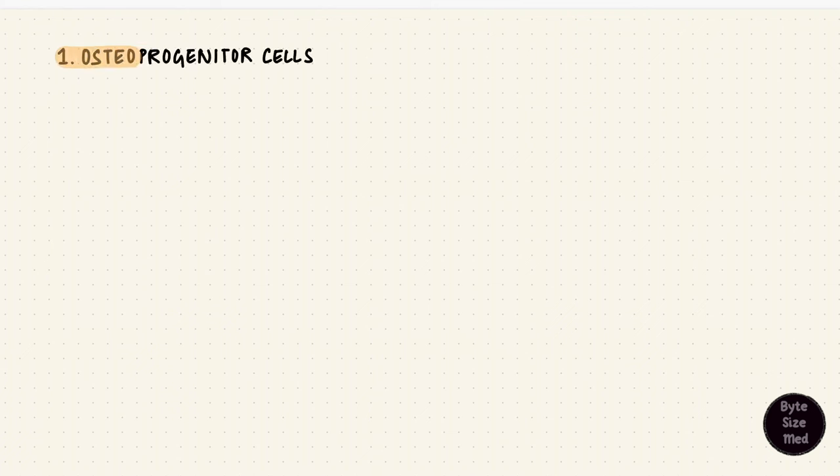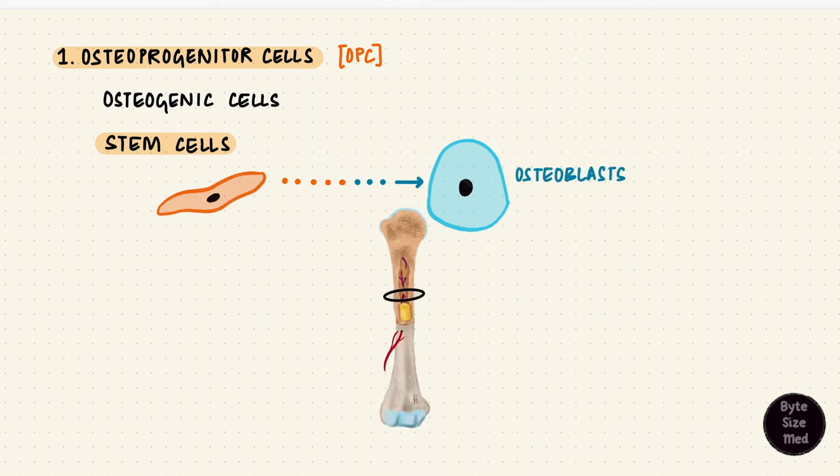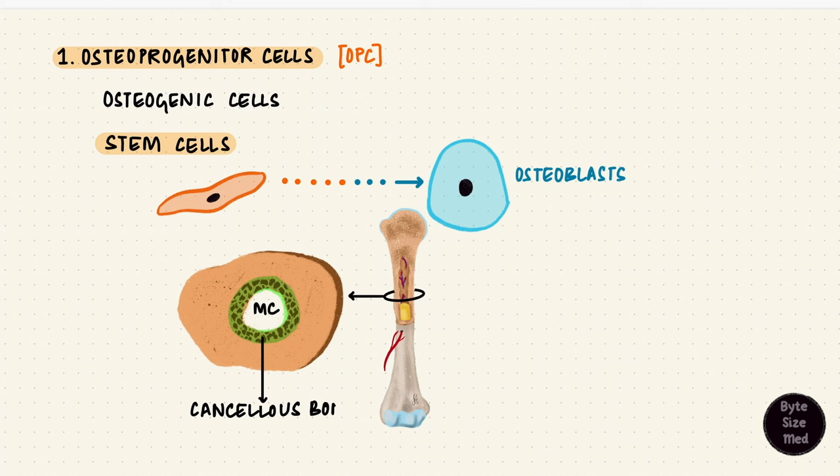The osteoprogenitor cells or the osteogenic cells are derived from the mesenchyme. They are stem cells so they can differentiate into other cells and here that will be the osteoblast. If you look at the shaft or the diaphysis of a long bone, they usually have a medullary cavity with the cancellous bone around them. The trabeculae of the cancellous bone are lined by endosteum. It lines all the marrow spaces.